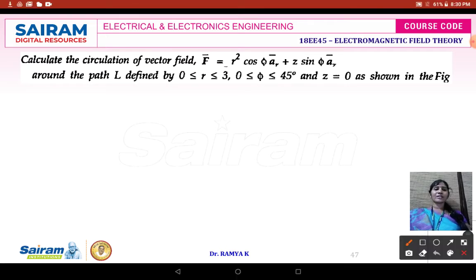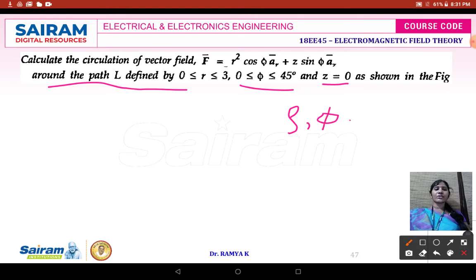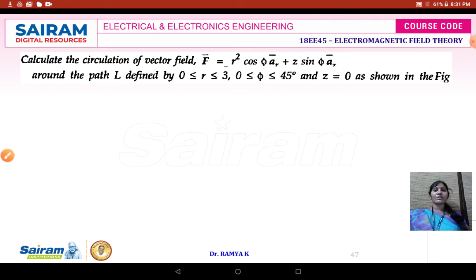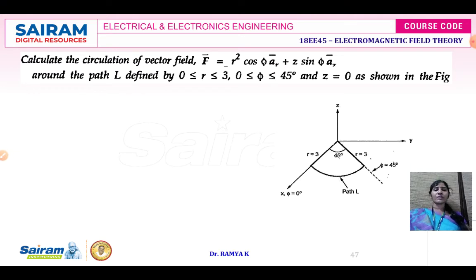The given coordinate is defined by the path defined by r, phi, z, which means it is given in the cylindrical coordinate system. In some notations and question papers, rho may be written as r. So if r, phi, z is given, it is called a cylindrical coordinate system; if rho, phi, z is given, it is also cylindrical. Here the given coordinate is in the cylindrical coordinate system, and we need to identify the circulation of the vector field as shown in the figure.